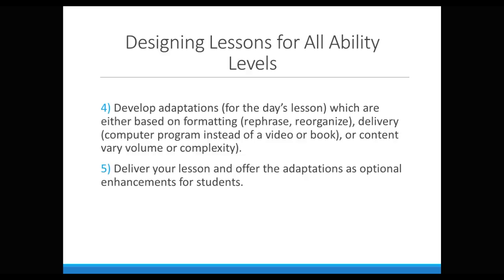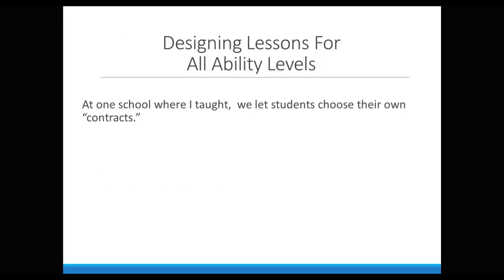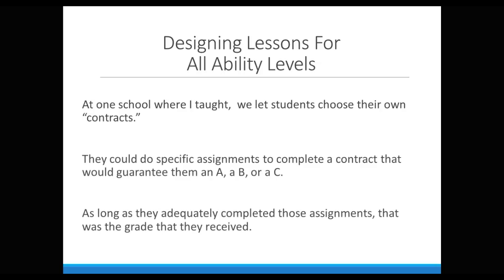Number five, you deliver your lesson and offer these adaptations as optional enhancements for students. At one school where I taught, we let students choose their own contracts — they could do specific assignments to complete a contract that would guarantee them an A, B, or C, and as long as they adequately completed those assignments, that was the grade they received. This worked really well for students who just wanted to graduate from high school and get a diploma, but it could also work in a college class or at other levels.